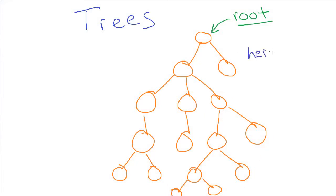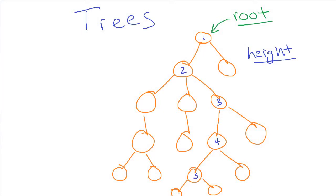The last piece of terminology we'll talk about now is the height of a tree. The height is the number of nodes from the root to the furthest away leaf. There are different paths from the root node to a leaf node. This path takes just two nodes, but that's not the height of the tree. The height of the tree is the path to the furthest away one. The height of this tree is six nodes — that's the distance from the root to the furthest away leaf.